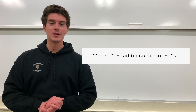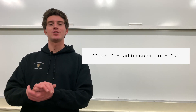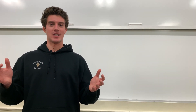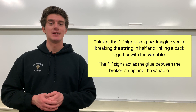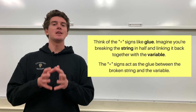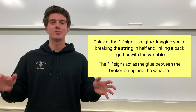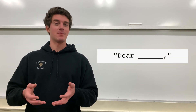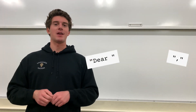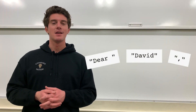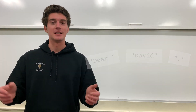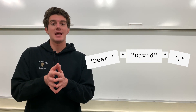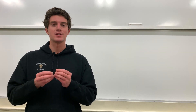Here's how we could properly concatenate our greeting. We start with 'dear', then 'address_to', then a comma at the end. The first question you're probably asking is: what's up with these plus signs? This is actually where the concatenation is taking place. Think of the plus signs as glue. Imagine our ideal greeting of 'dear so-and-so' — we snap it in half, place the desired name in the middle, and the plus signs act as the glue that combine the broken string with the variable containing our desired name.